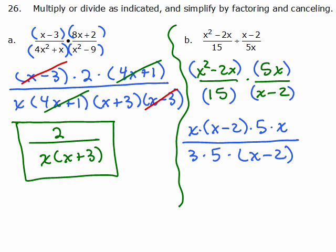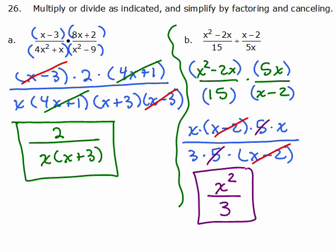And now I see what I can cancel, x minus 2s go and the 5s go and so what I have left in the top is an x times an x, x squared. And the denominator all I have is a 3. So I have x squared over 3.